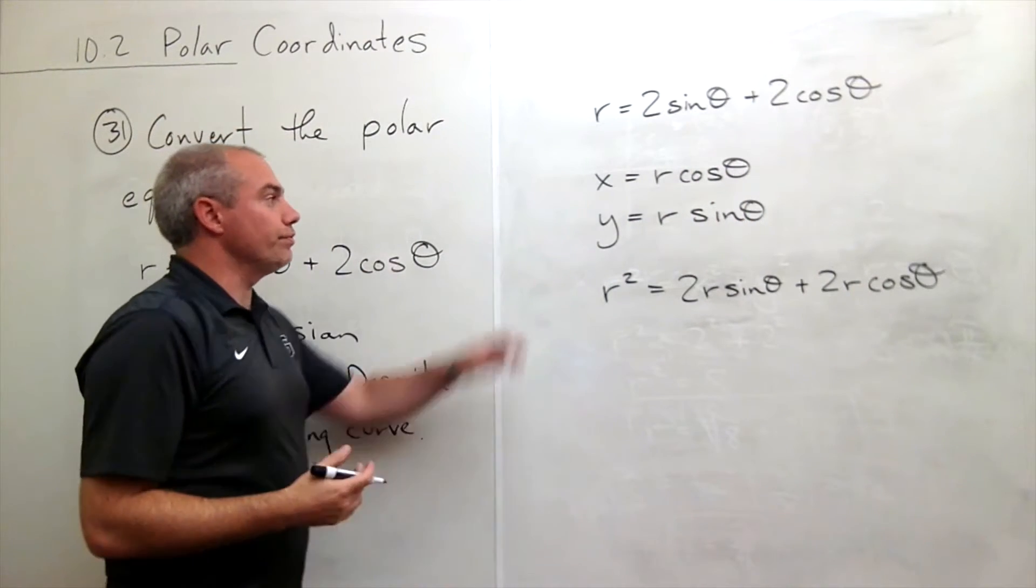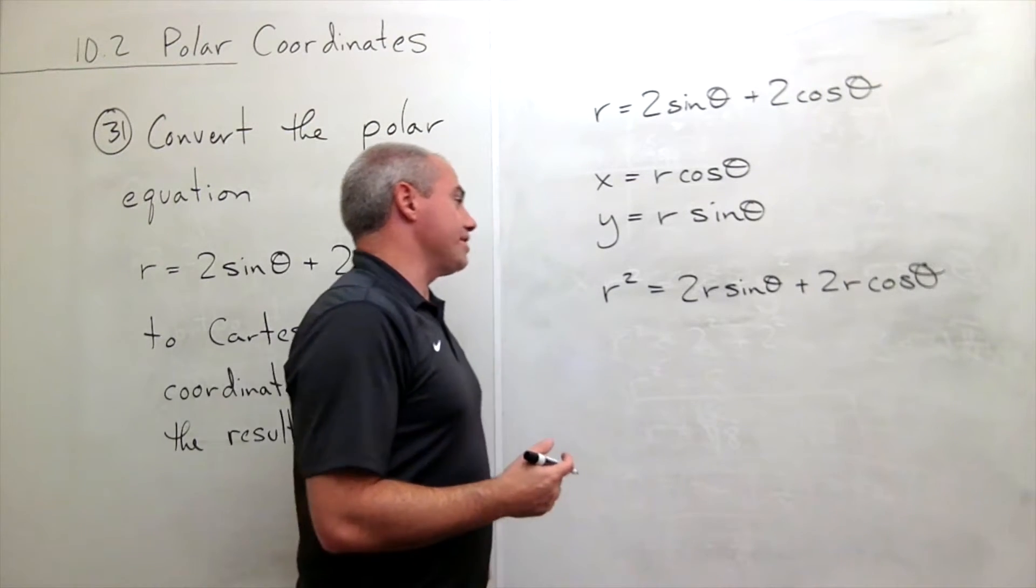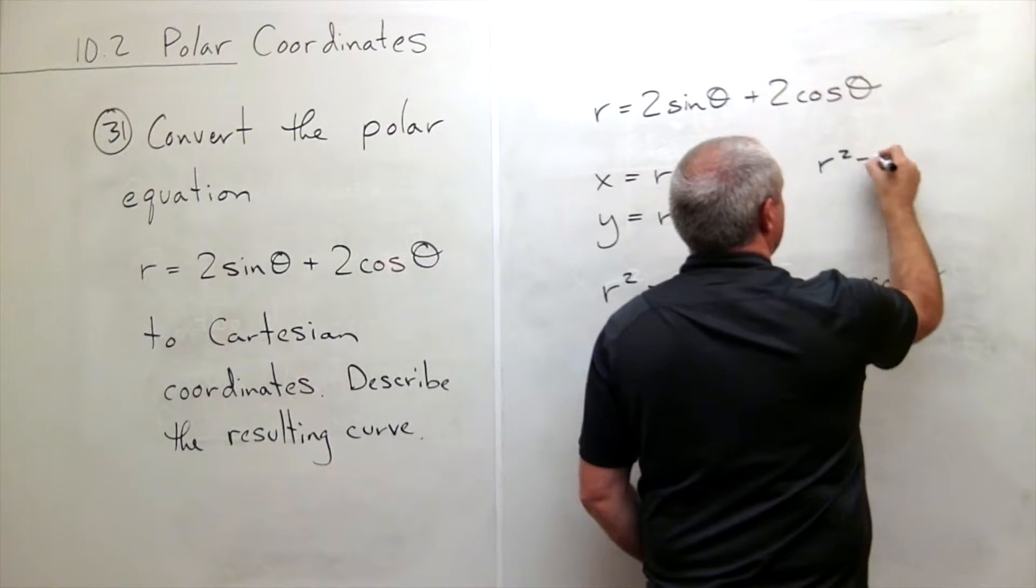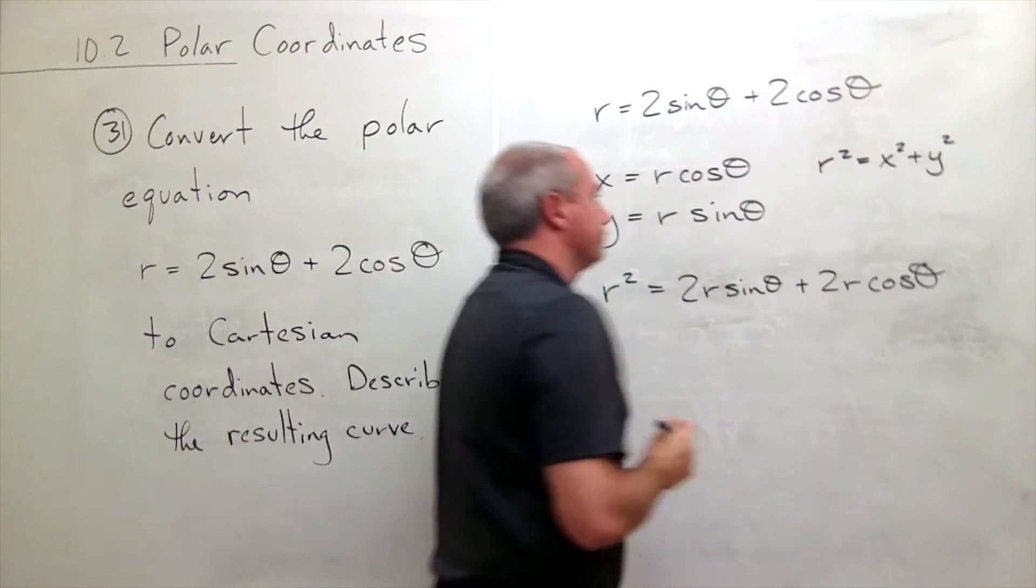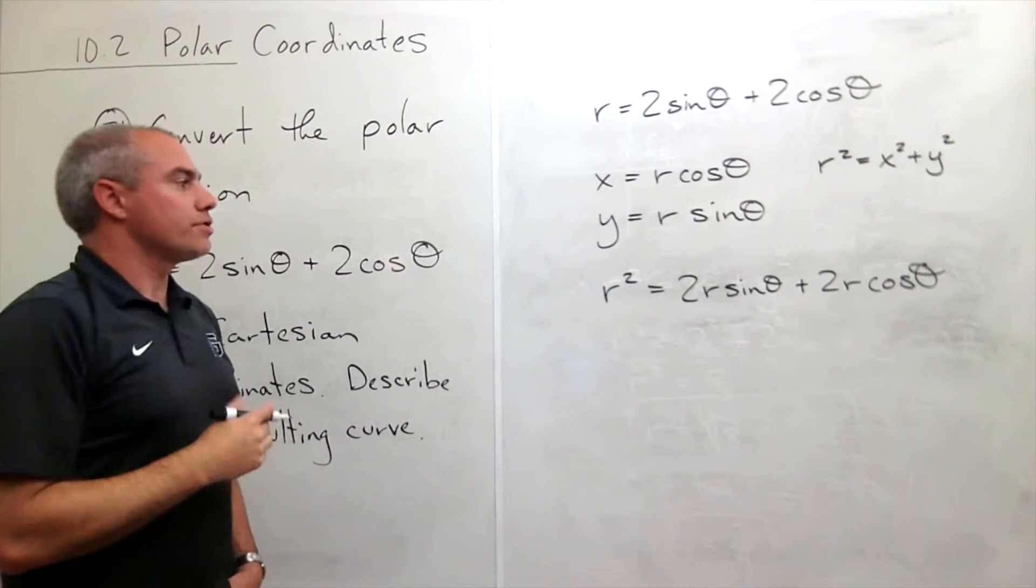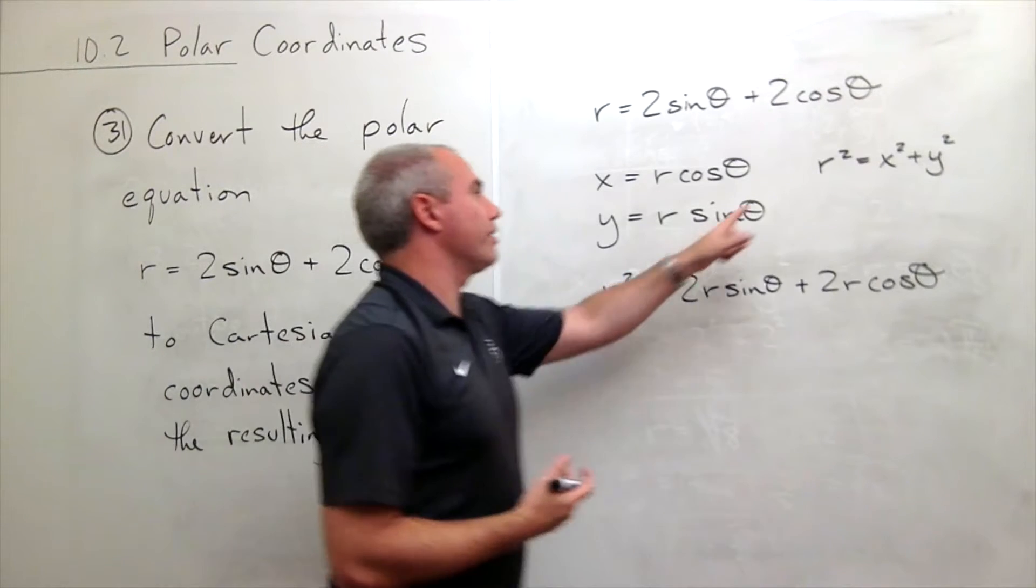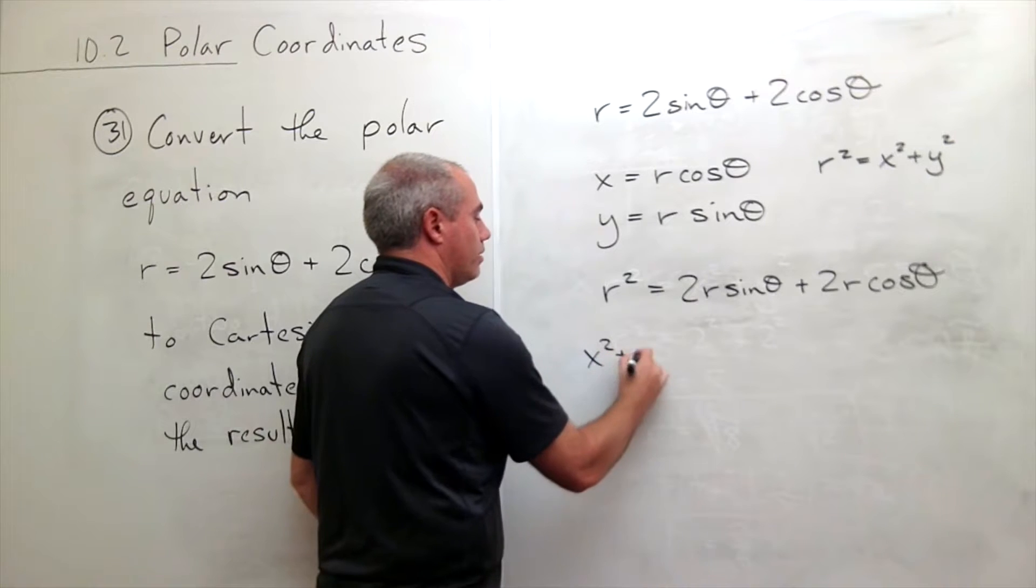Now I can use these two pieces of information and a third piece of information. I also know that r squared is equal to x squared plus y squared. So let's plug all that in together. I know that r squared is x squared plus y squared, so instead of an r squared here I get x squared plus y squared.